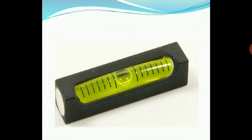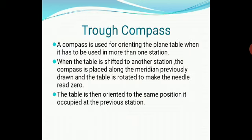The bubble must be placed in the center of the level tube. The next component is the trough compass, which is used to orient the plane table. When shifting the table from one station to another, the compass is placed along the previously drawn meridian and the table is rotated to make the needle reading zero, orienting the table in the same position as at the previous station.